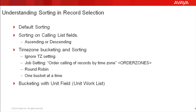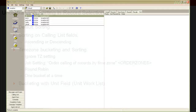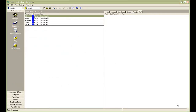We will see how the ignore timezone setting in the selection and the order by timezone setting in the job work, and also if you have a unit worklist job, how the records are sorted and bucketed. To start with, let's talk about the default sorting.